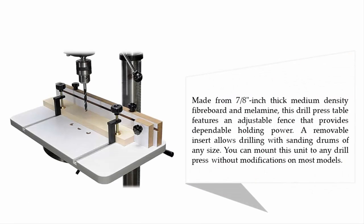Made from 7/8 inch thick medium density fiberboard and melamine, this drill press table features an adjustable fence that provides dependable holding power. A removable insert allows drilling with sanding drums of any size. You can mount this unit to any drill press without modifications on most models.